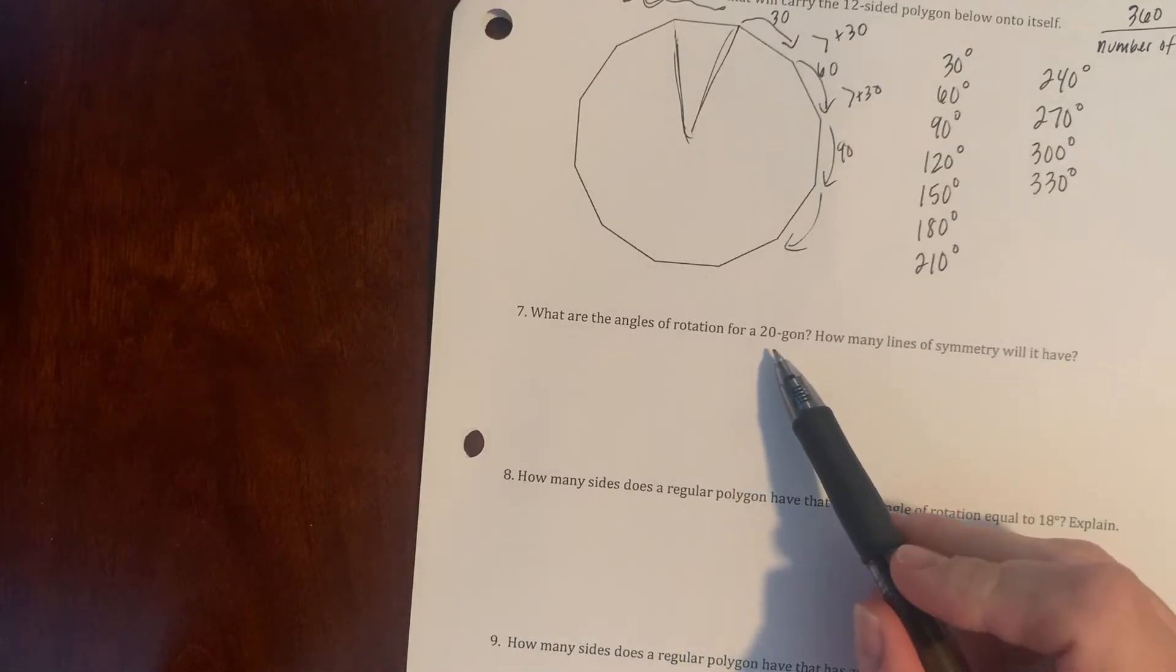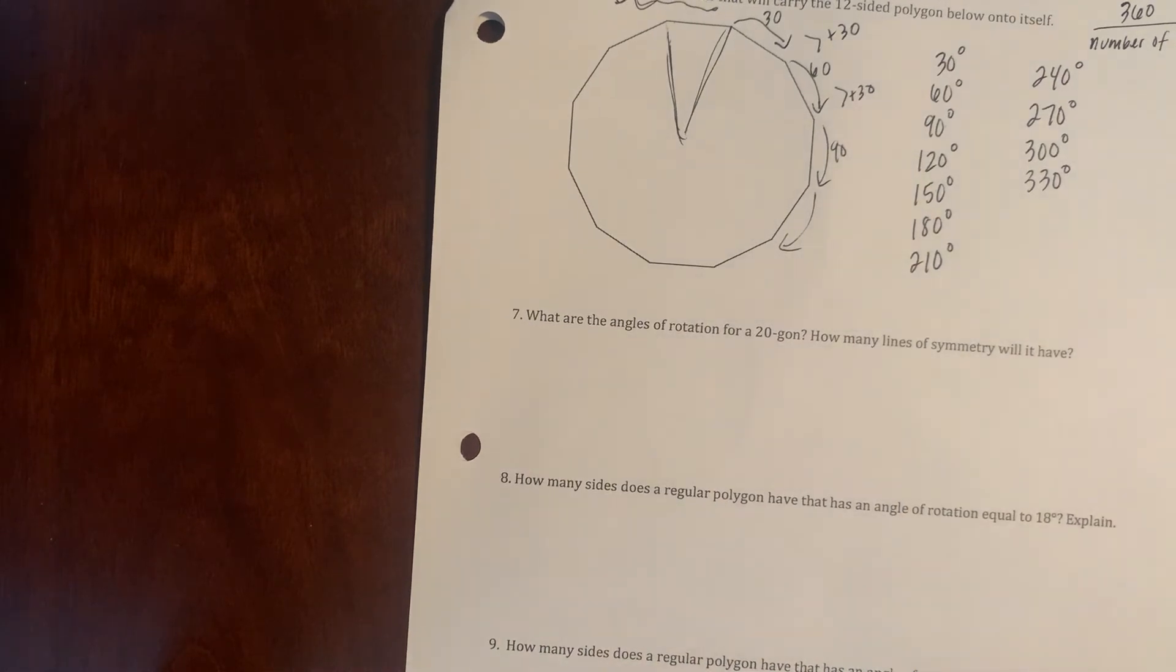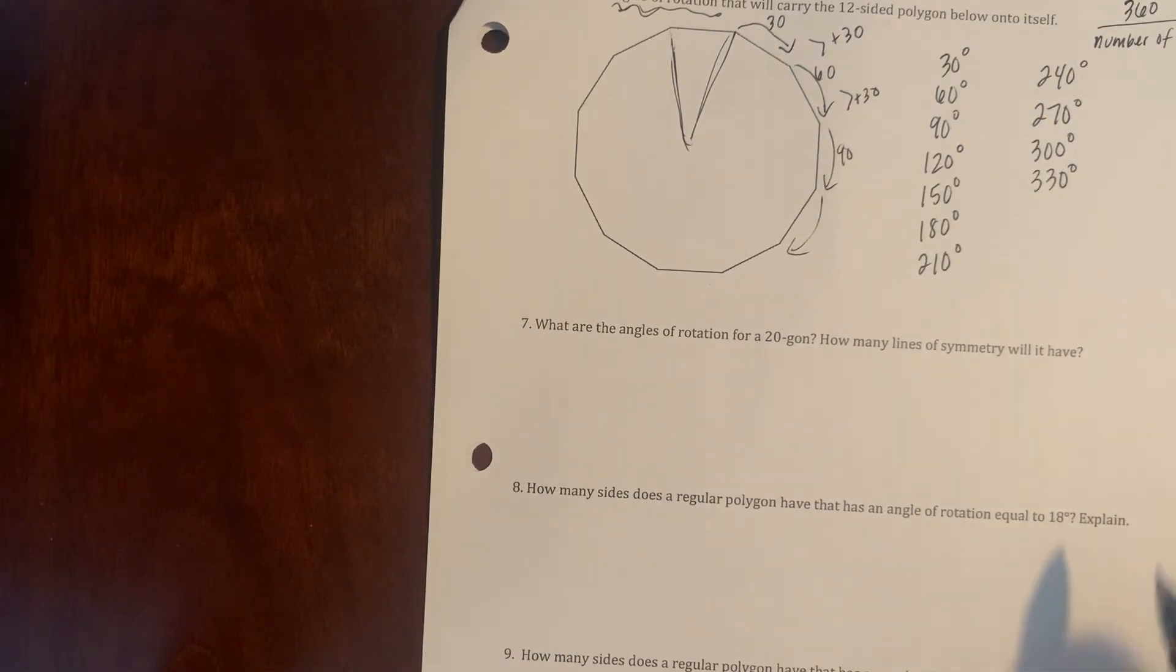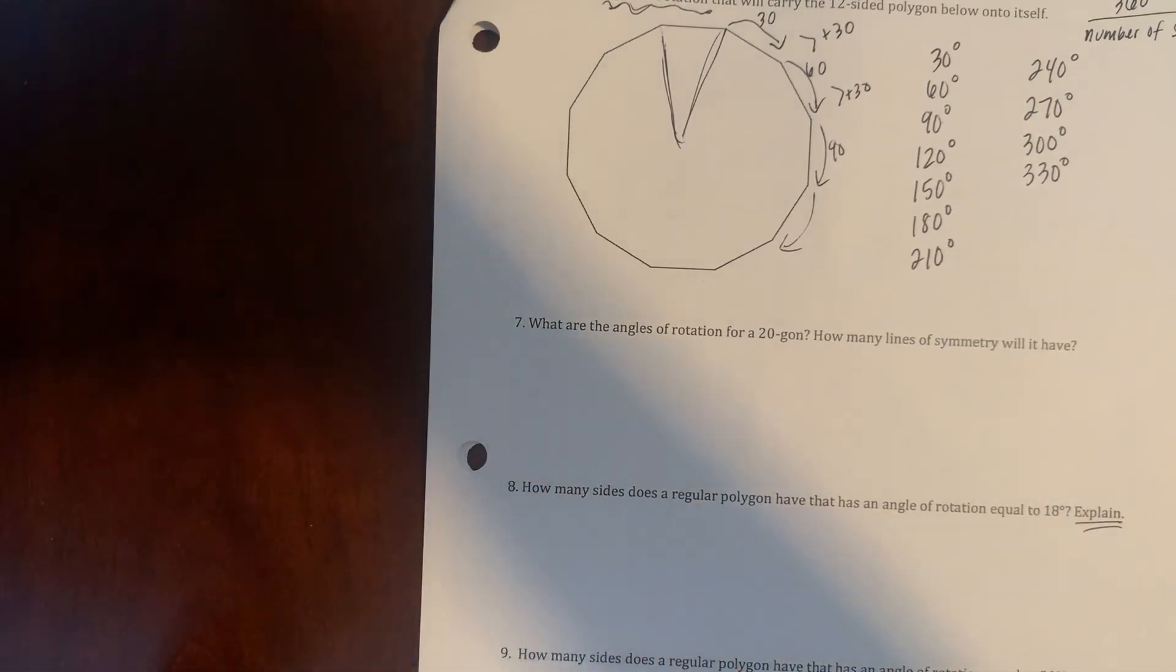So 7 asks you to do the same thing for 20 and determine how many lines of symmetry. And then these are a little bit more solving. Remember to explain your answers.